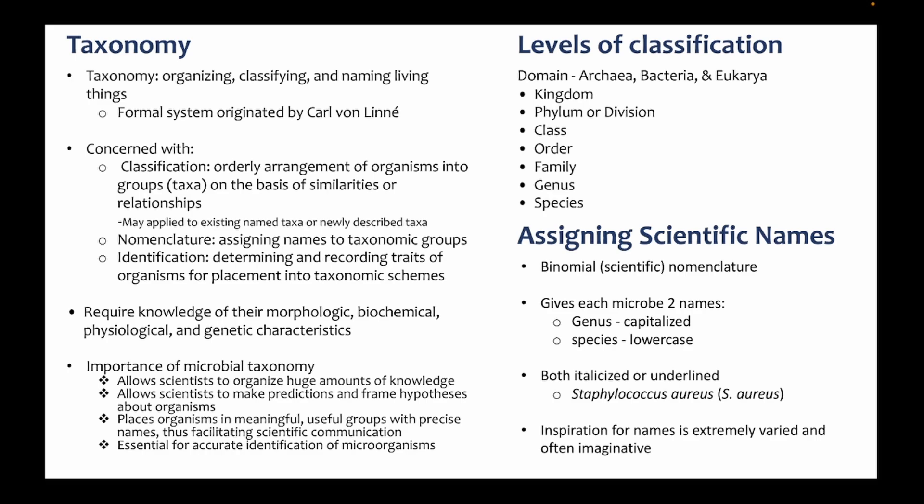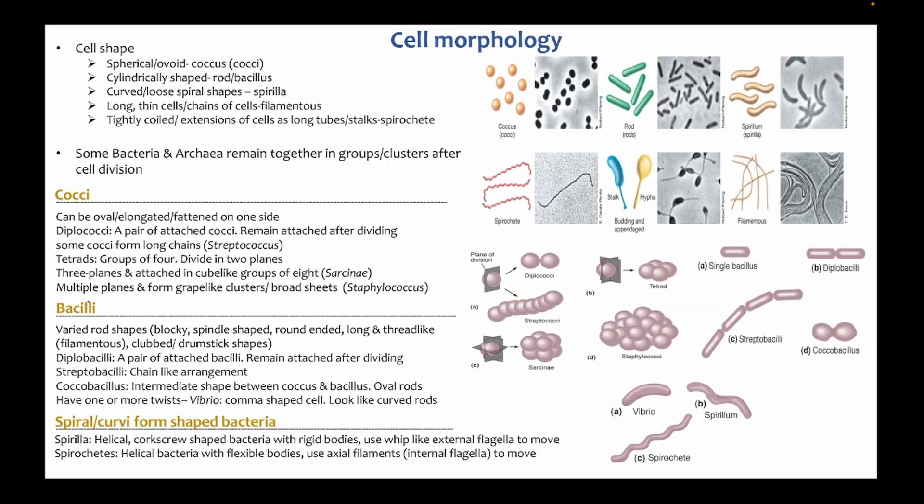Inspiration for names is extremely varied and often imaginative — from the names you can sometimes guess why a bacterium is named that way. For example, Staphylococcus aureus: 'coccus' means round, 'staphylo' means like a bunch of grapes, and 'aureus' means golden — because it forms golden-yellow colonies on agar.